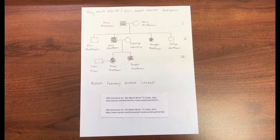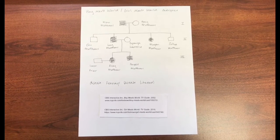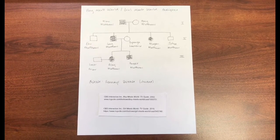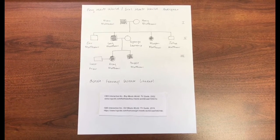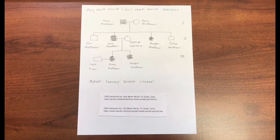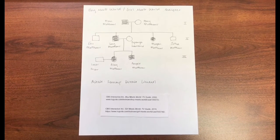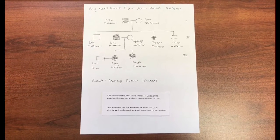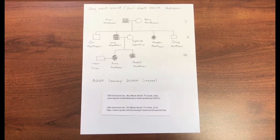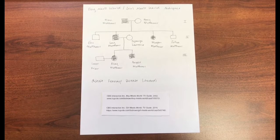This is Mia King's video in response to exam mini video 1. This is a pedigree of Boy Meets World and Girl Meets World in which Alan Matthews marries Amy Matthews.